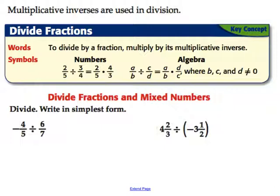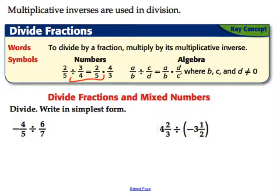When we're dividing fractions, the reason we use the multiplicative inverse is to allow us to divide fractions. The process is: let's say we have 2 fifths divided by 3 fourths — we change division to multiplication, and the fraction that's being divided gets flipped. So we change the division sign to multiplication and use the reciprocal of the second fraction.